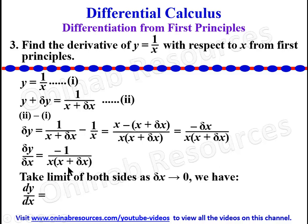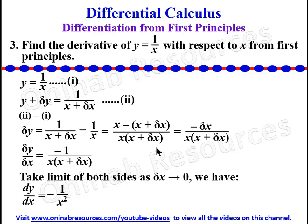Now we take the limit of both sides as delta x approaches 0. We have dy/dx = −1/x², since when delta x = 0, x(x + delta x) becomes x·x = x². So the derivative of y = 1/x with respect to x from first principles is −1/x². That's the end of problem 3 and the end of this tutorial. Check the description and our YouTube channel for more links to other videos on differential calculus. Goodbye!